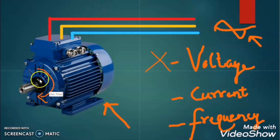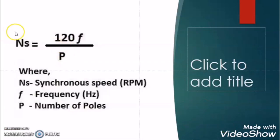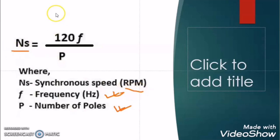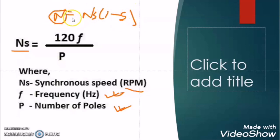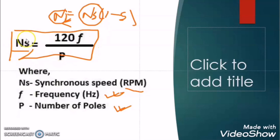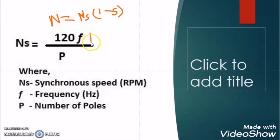Now let us move to the next method. As we know, the synchronous speed is given as Ns = 120f / p, where f is the frequency in hertz and p is the number of poles. The rotor speed N = Ns × (1 − s). The rotor speed is directly proportional to synchronous speed, so if we change the synchronous speed we can control the rotor speed. By increasing and decreasing the supply power frequency we can control the synchronous speed and accordingly control the rotor speed.